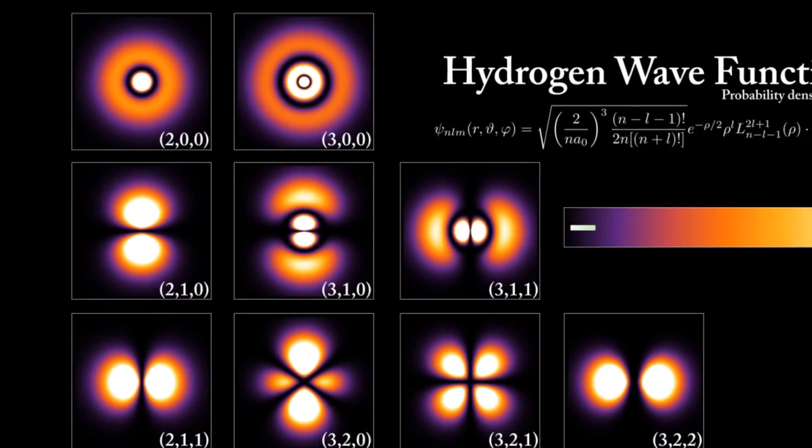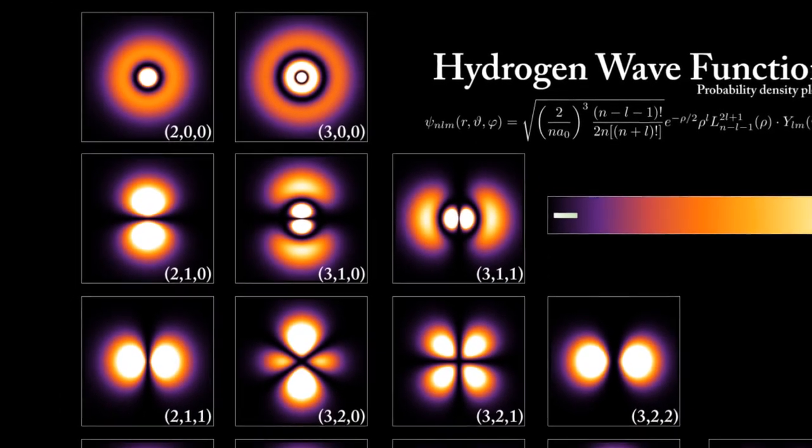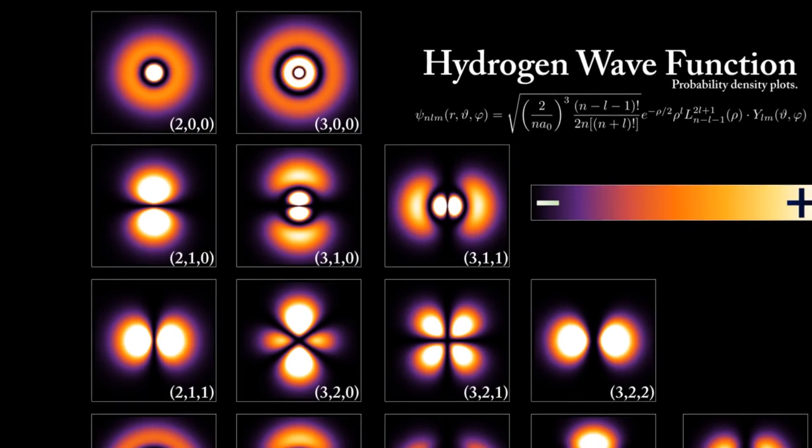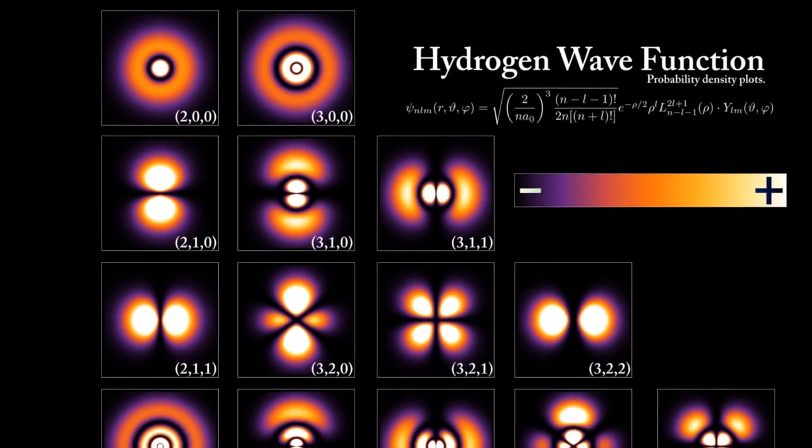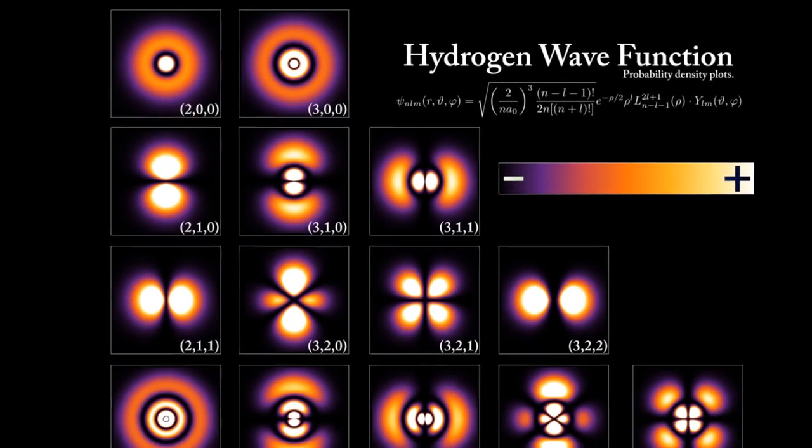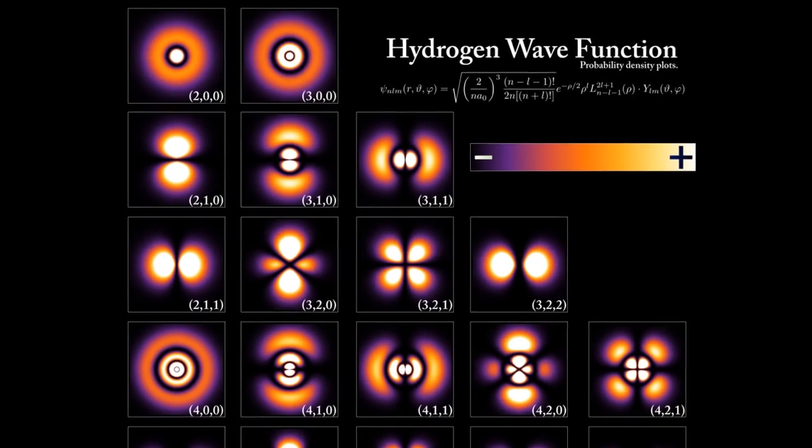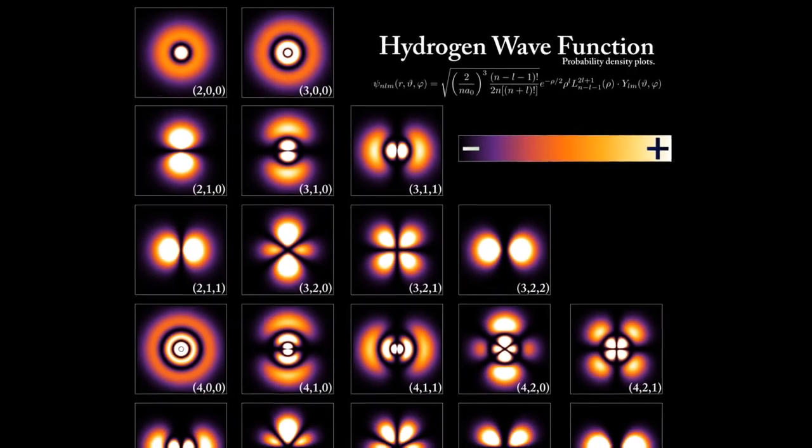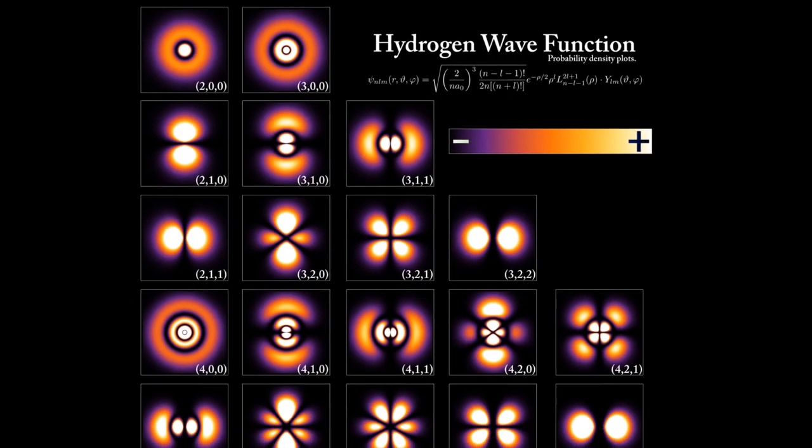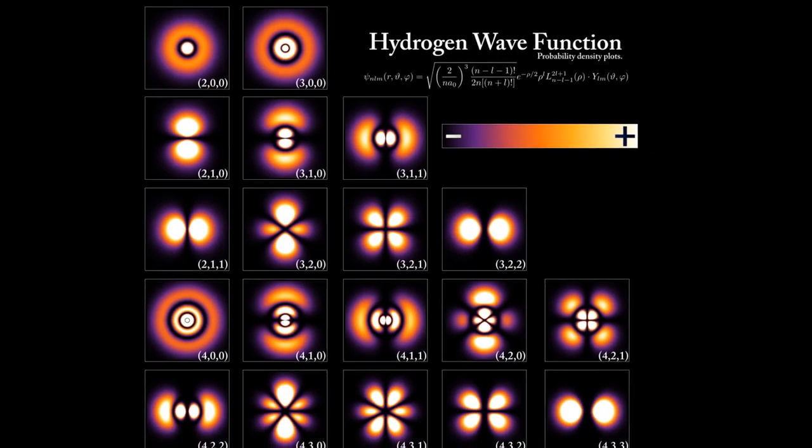Indeed, because everything in nature vibrates and every vibration can be written in a mathematical equation. Mathematics is the numbers Pythagoras referred to. The ancient philosopher was right, even without access to modern science.